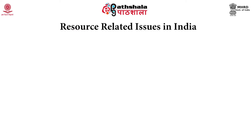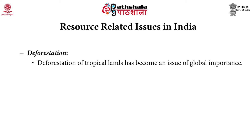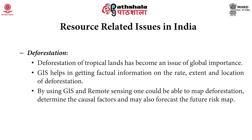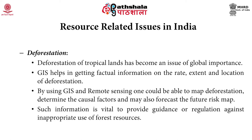Coming to resource-related issues in India, the major problems related to resource conservation are deforestation, soil degradation, and loss of biodiversity. Deforestation of tropical lands has become an issue of very significant importance. GIS helps in getting factual information on the rate, extent, and location of deforestation. By using GIS and remote sensing, one can map deforestation rate, determine causal factors, and forecast future risk maps. Such information is vital to provide guidance or regulation against inappropriate use of forest resources.